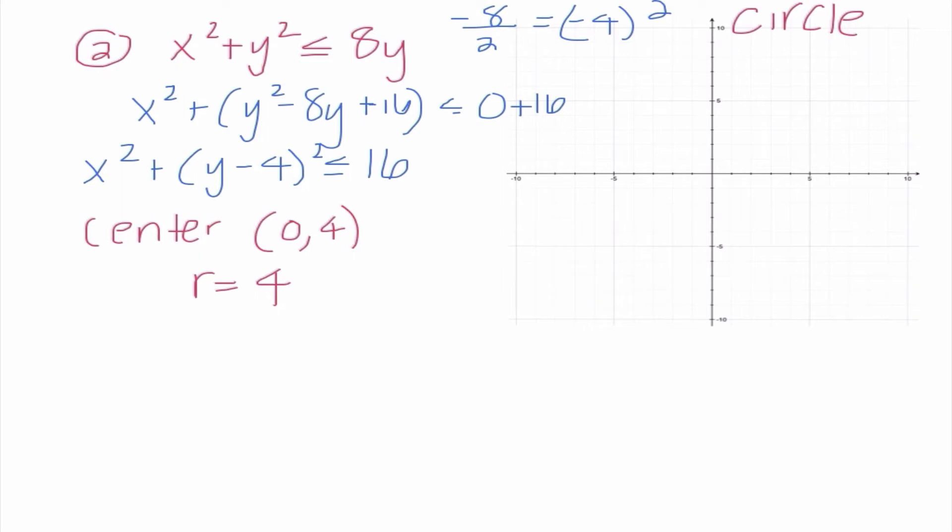So I'm going to go (0,4), and then I need to go out 4 in all directions. And this time I need to determine should my circle be solid or dashed. And since we have this equal to, I know that I can actually make a solid circle.